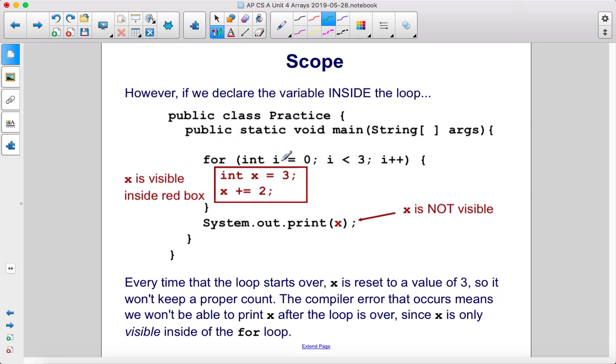However, if we declare the variable inside the loop, every time that the loop starts over, x is reset to a value of 3, so it won't keep a proper count. The compiler error that occurs means we won't be able to print x after the loop is over since x is only visible inside of the for loop.